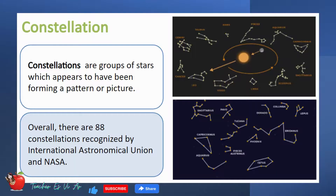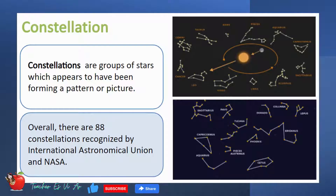Let's recall the meaning of constellations. Constellations are groups of stars that appear to have been forming a pattern or picture. In this lesson, we will learn more about the different constellations which are visible in different months of the year.